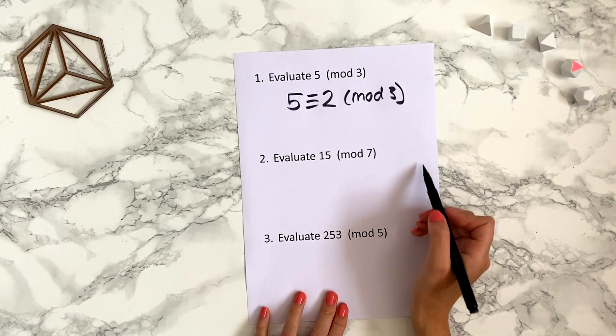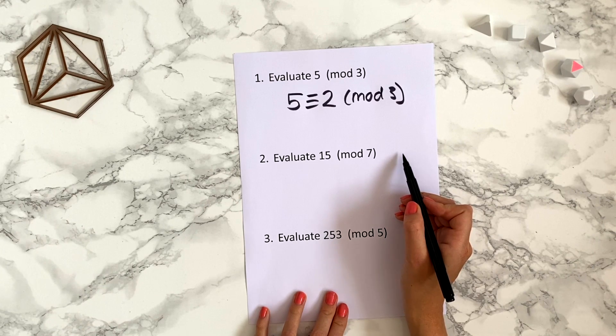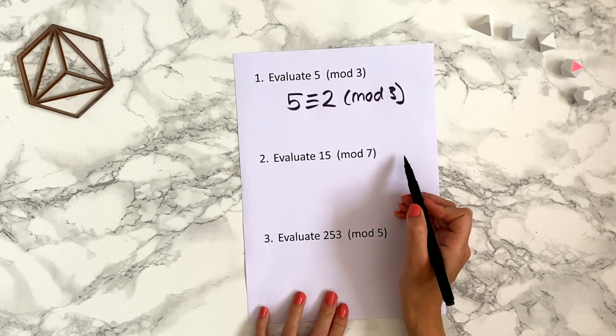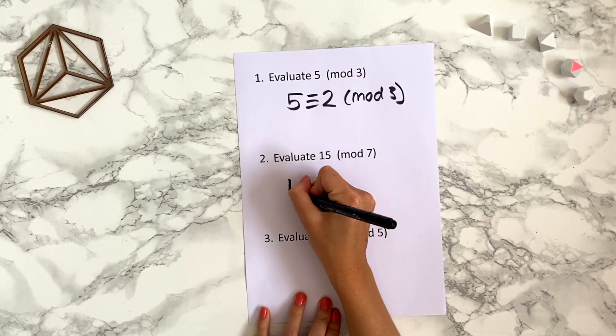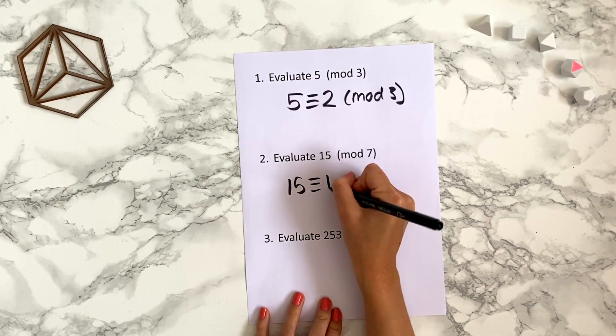So if you imagine our 7 hour clock with our 0 at the top, to get to 7 we'd go around once and end up at the top. To get to 14 we'd go around another time and end up at the top. And then to get to 15 we just need to go one hour further. So 15 is congruent to 1 mod 7.